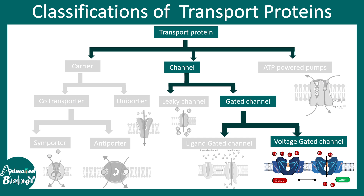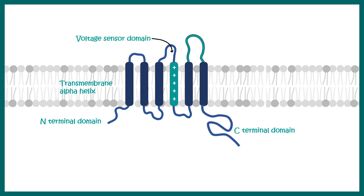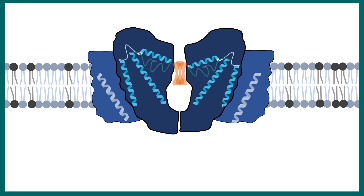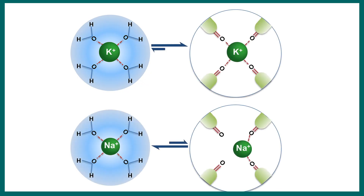Now we are moving to voltage-gated ion channels. As the name suggests, they are gated by voltage, so a voltage-sensing component must be encoded into the protein structure. These proteins have a voltage sensor domain containing different charged residues — in the case of the voltage-gated potassium channel, most charge residues are positively charged. There is also a selectivity filter that determines which type of ion passes through the channel. The structure includes a pore-forming domain, a selectivity filter, and voltage sensor domains.